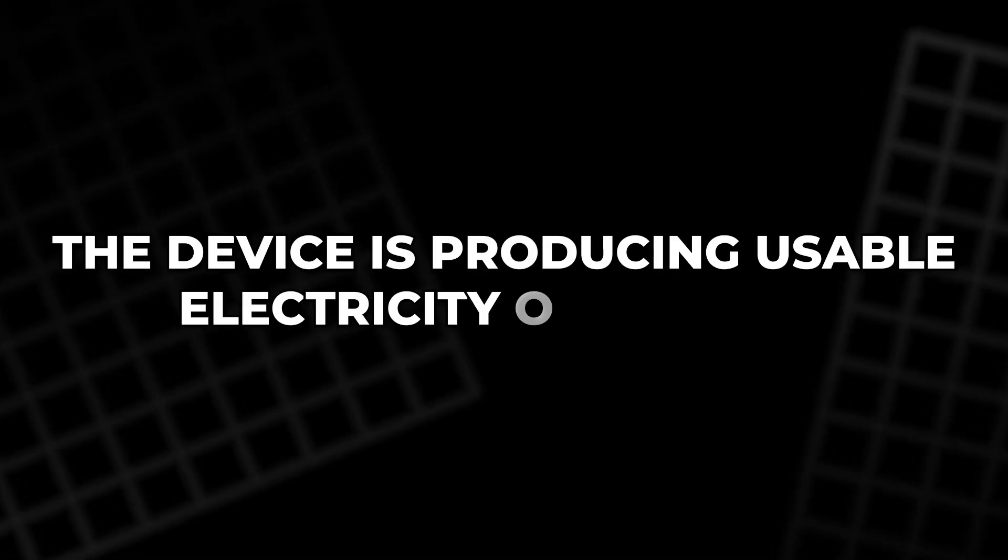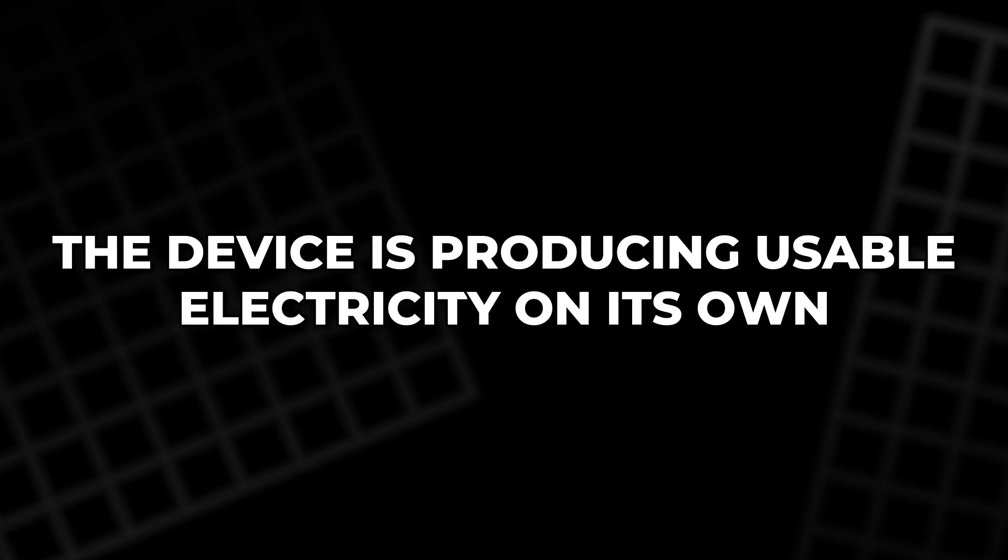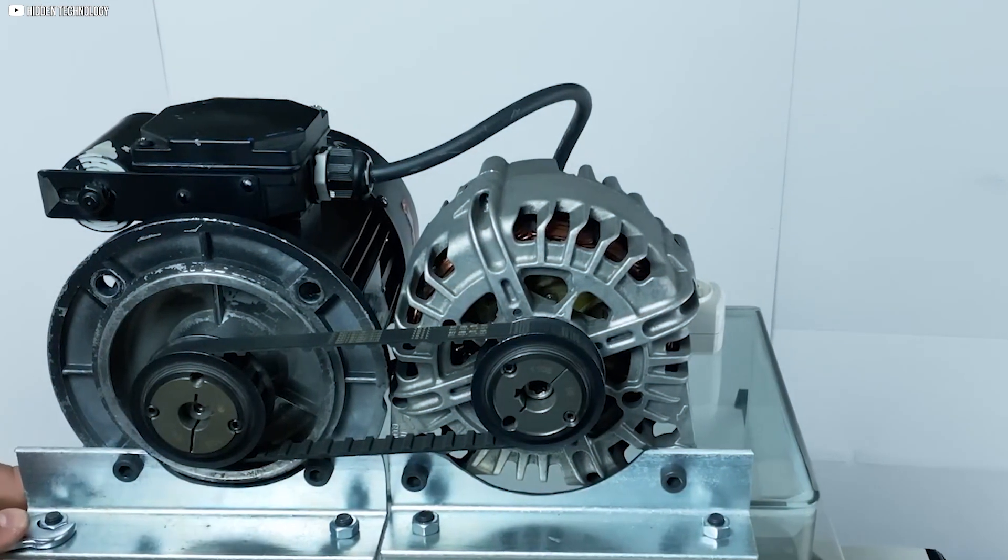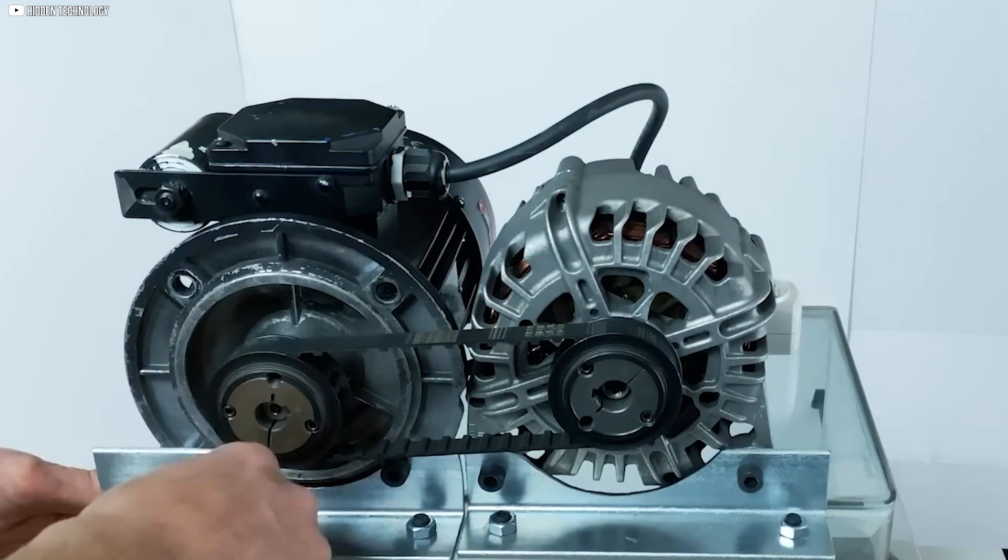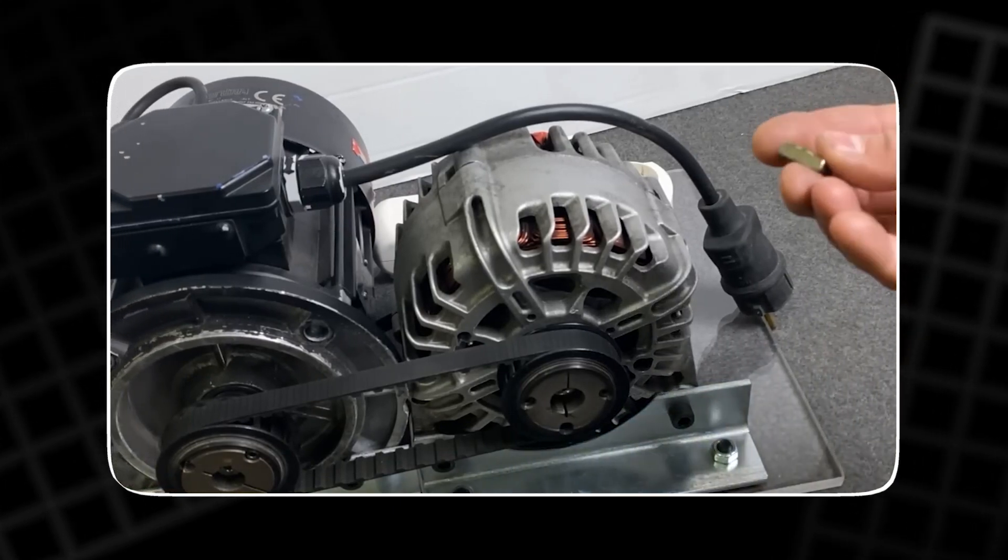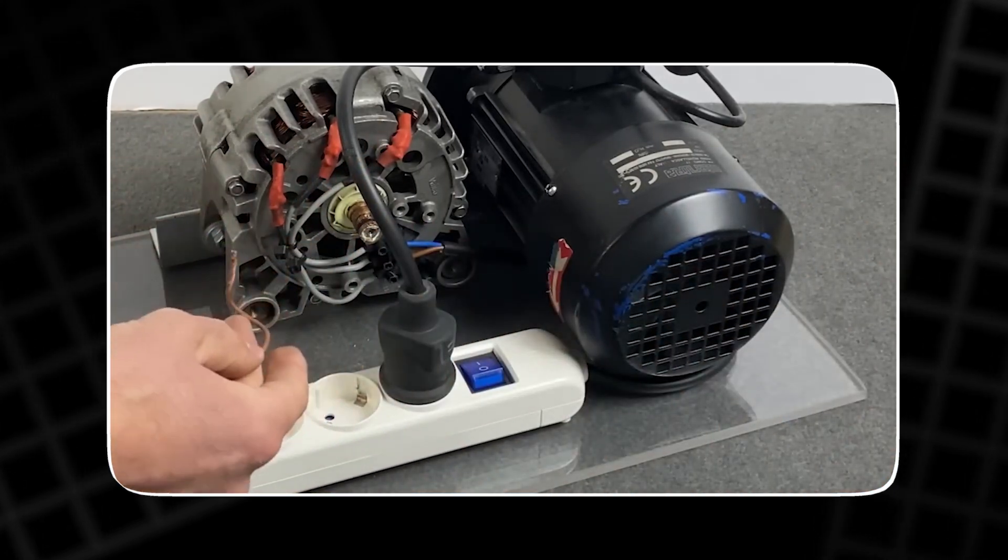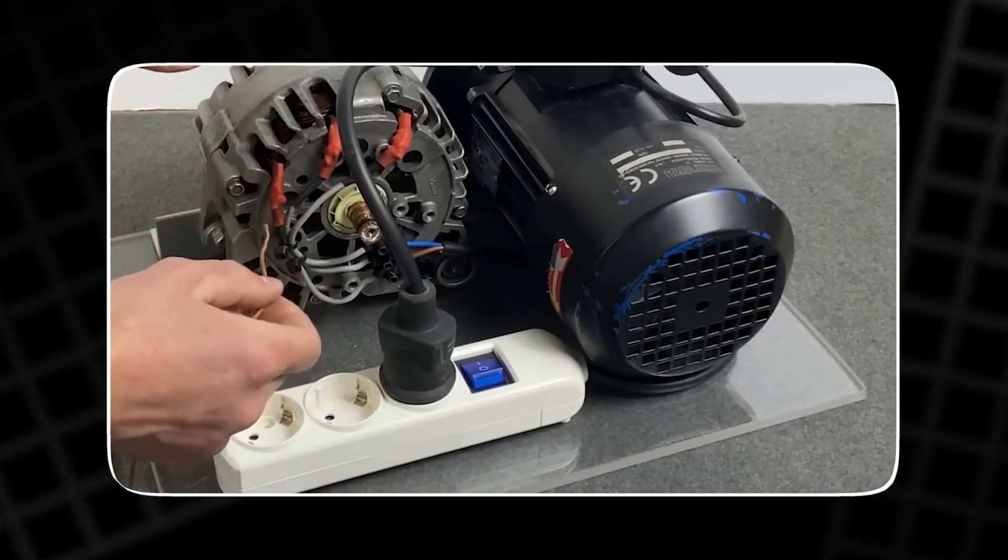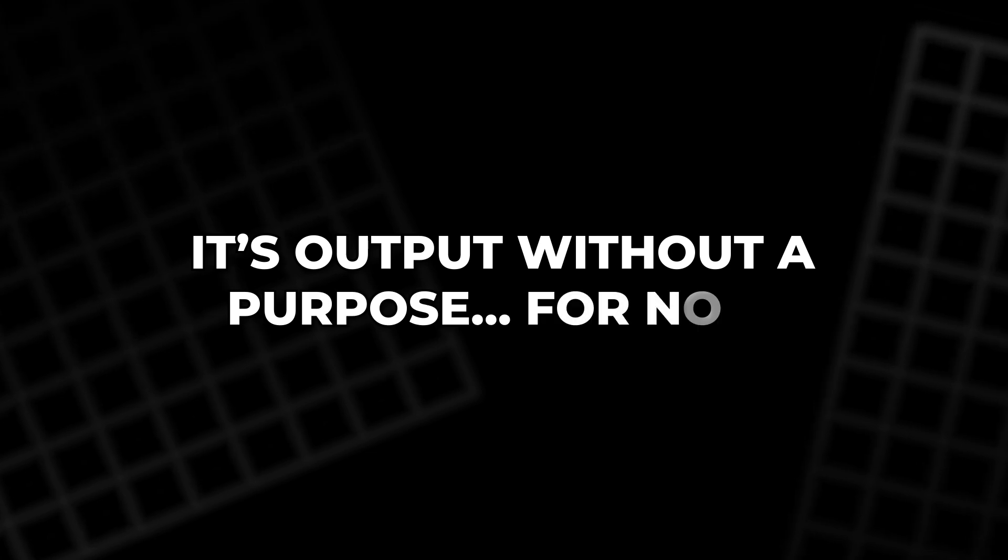The alternator hums steadily. No overheating. No sparks. It seems balanced. Controlled. But while the output is shown, one thing is missing. A connected load. We don't see it powering lights, machines, or storage systems. It's output without a purpose. For now.